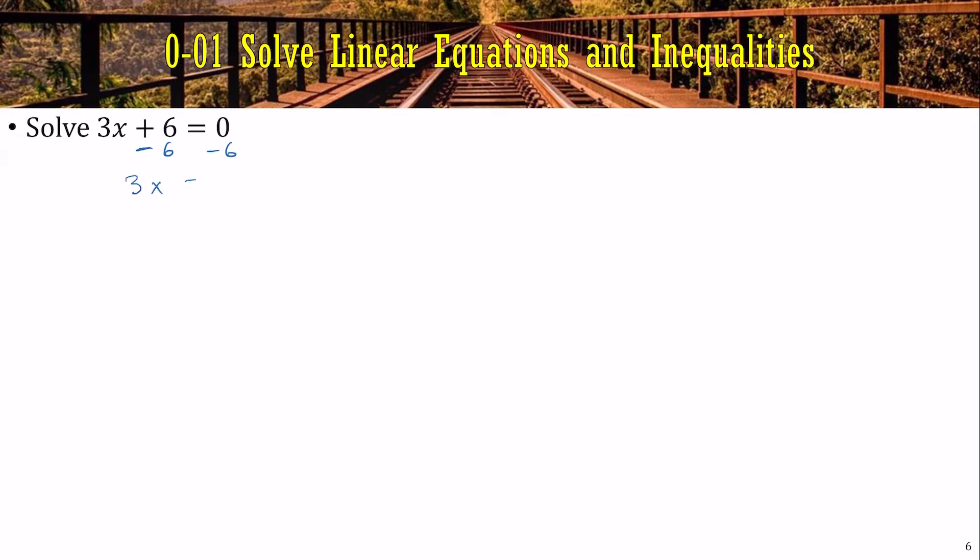So we'll subtract 6 from both sides. We have to cancel out. 0 minus 6 is negative 6. Now it's 3 times x. To undo that, we'll divide by 3. 3's cancel out. We have x equals negative 2. And of course, you should check by plugging it in. 3 times negative 2 plus 6 is in fact 0.